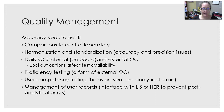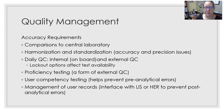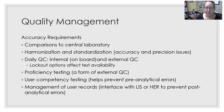There is also proficiency testing, which is another form of external QC. An entity like CAP — the College of American Pathologists — sends unknown samples to the lab, you run those unknowns through your point of care testing method, and you report the results. They then check whether those results are accurate. If you don't pass — if you repeatedly fail the proficiency testing for a given test — you can lose your ability to perform that test.